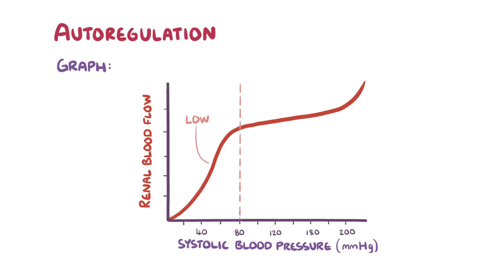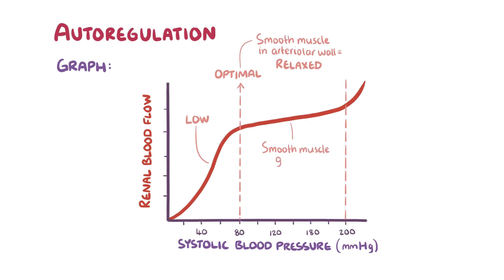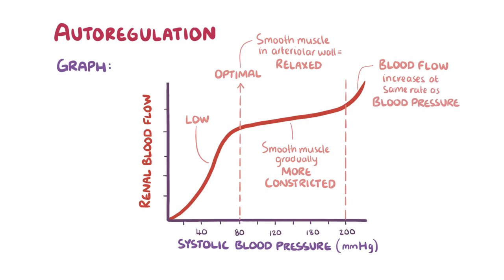At 80 mmHg, renal blood flow reaches an optimal value and the smooth muscle cells in the arterial wall are completely relaxed. Between 80 and 200 mmHg, smooth muscle cells gradually become more constricted as blood pressure rises, maintaining a constant renal blood flow. Above 200 mmHg, renal blood flow increases in parallel with renal blood pressure.